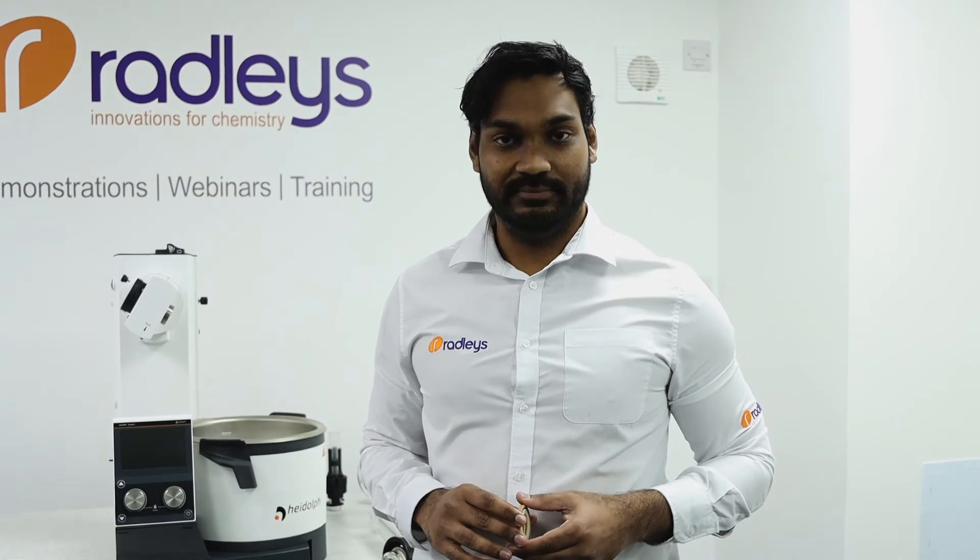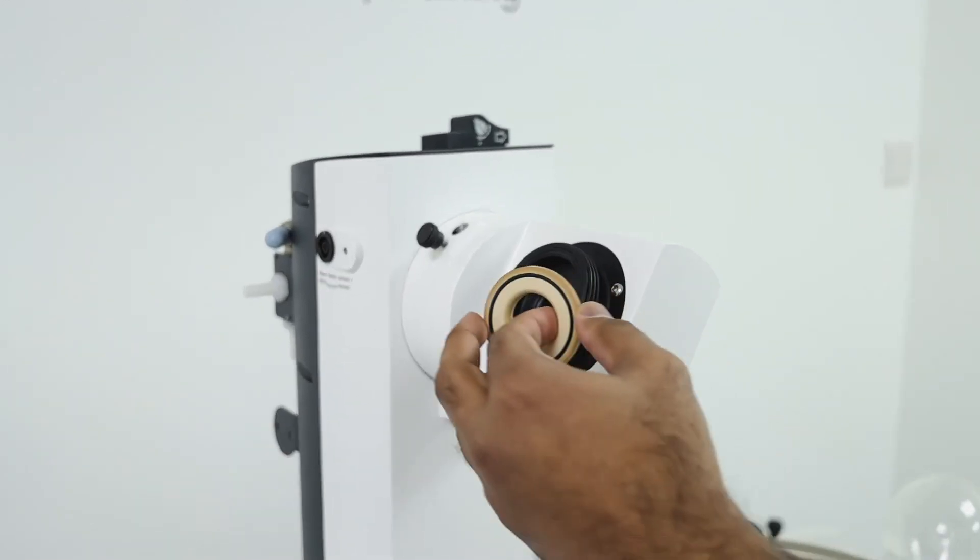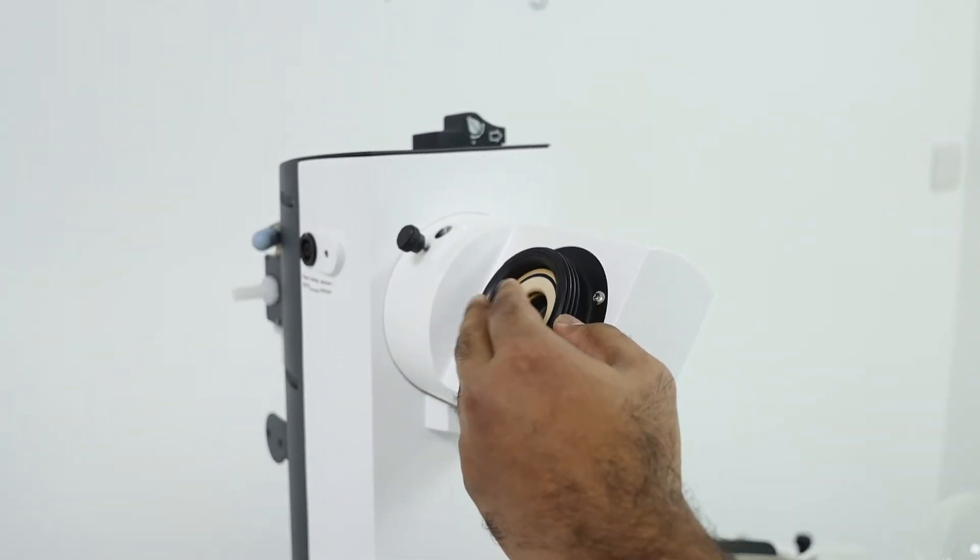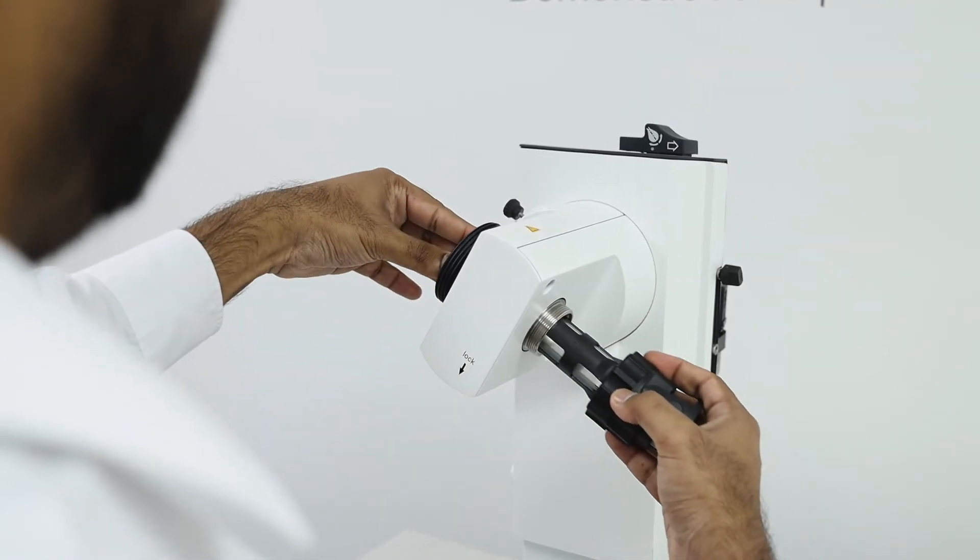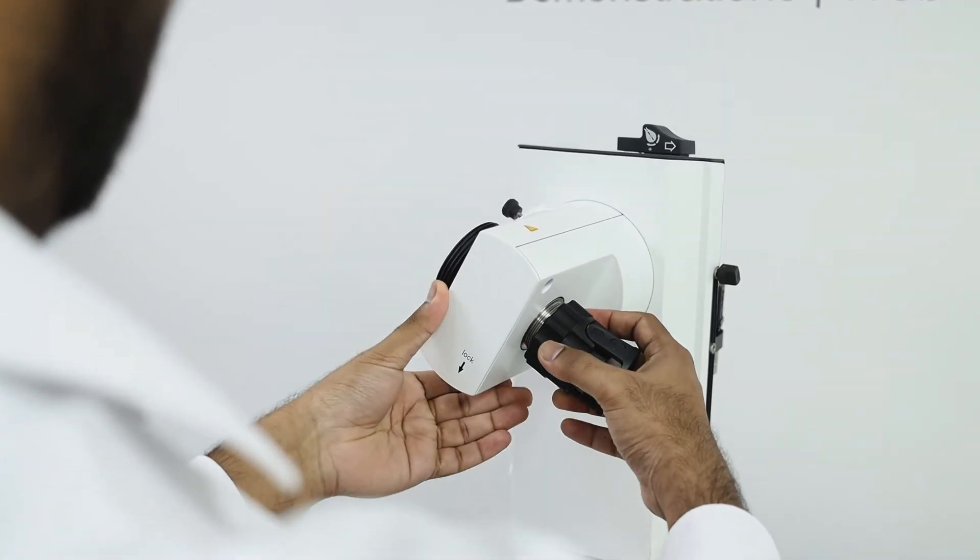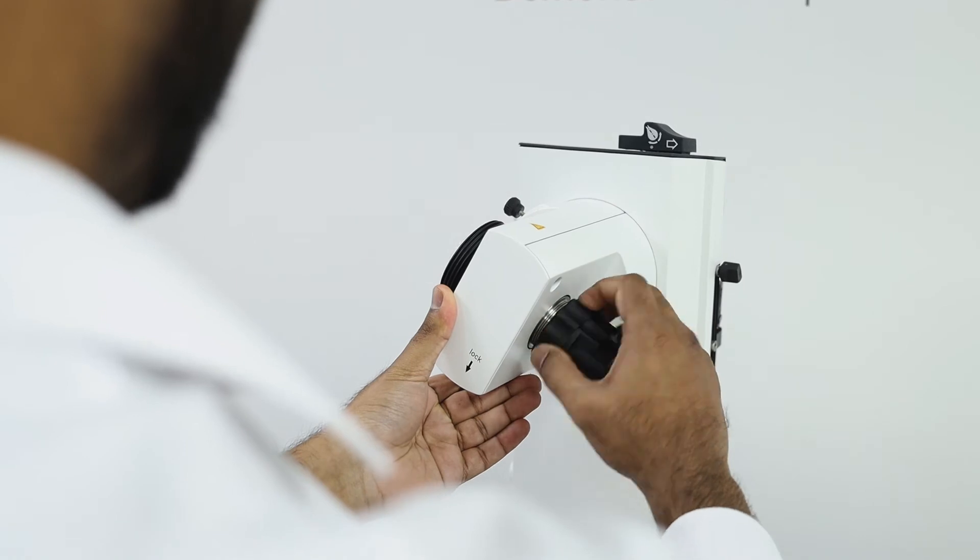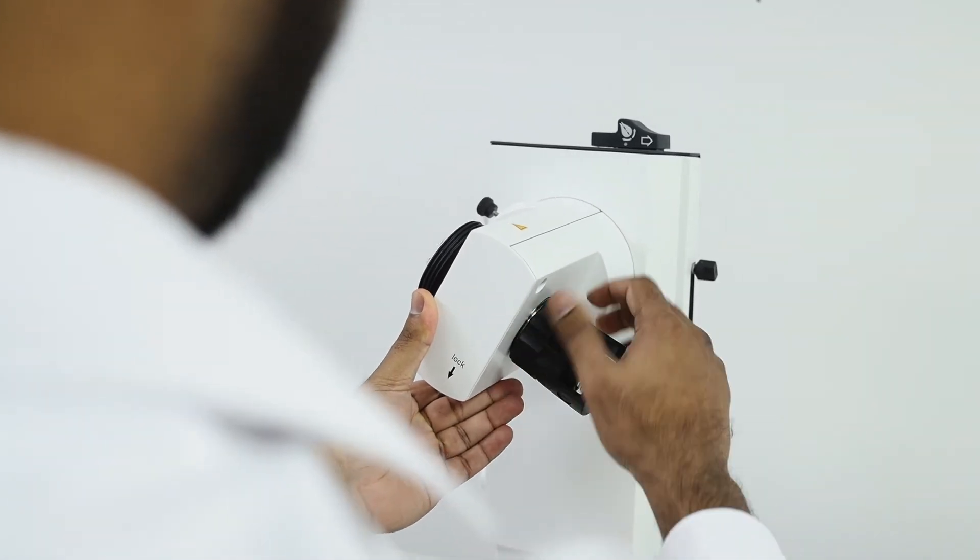Now I'll show you how to reassemble the system. First replace the vapor seal against the drive then replace the vapor tube. Again screw it in while holding down the lock button until it's tight.